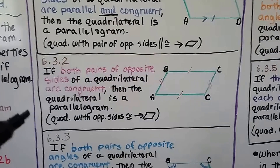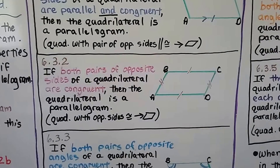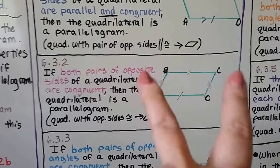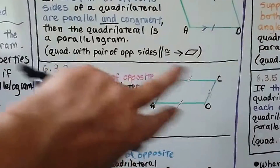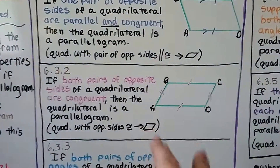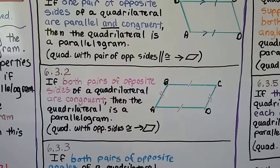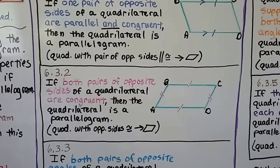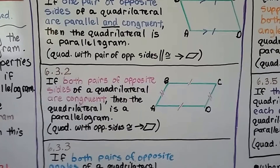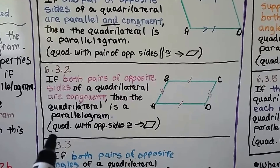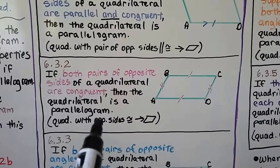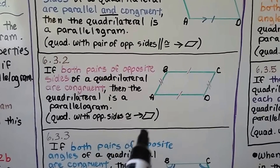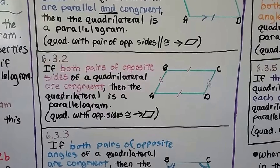Theorem two: if both pairs of opposite sides of a quadrilateral are congruent, then the quadrilateral is a parallelogram. In geometric notation for a proof: quadrilateral with opposite sides congruent, therefore parallelogram.